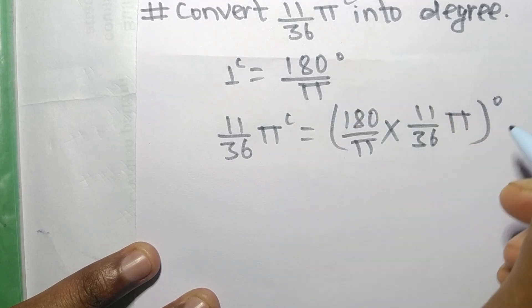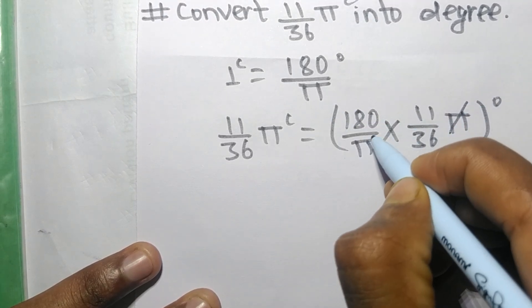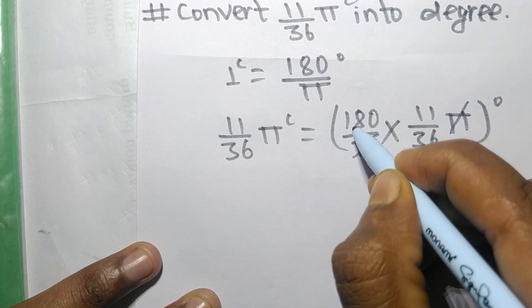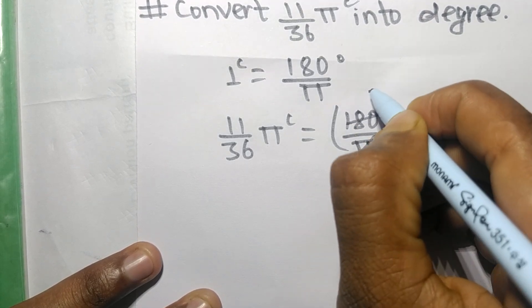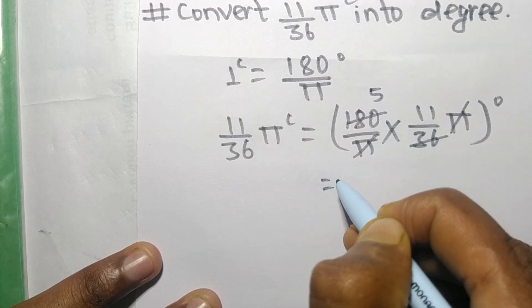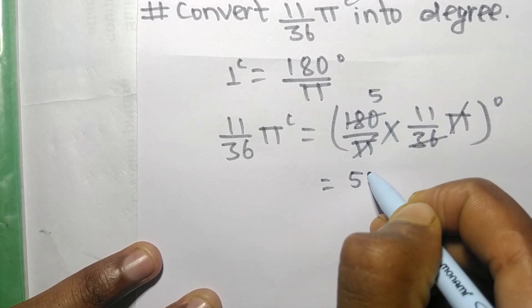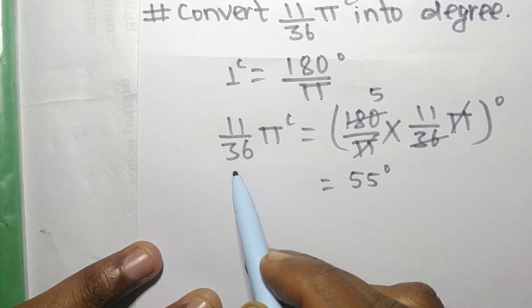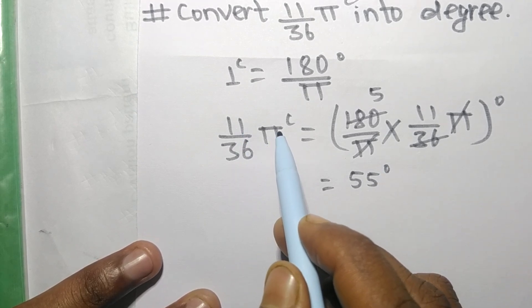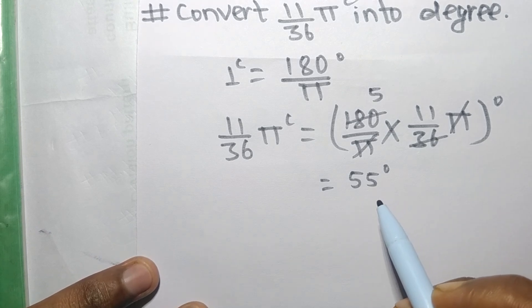Now we can cancel: π and π cancel, and 180 divided by 36 gives us 5. So 5 times 11 equals 55 degrees. Therefore, 11/36 π radians is equal to 55 degrees.